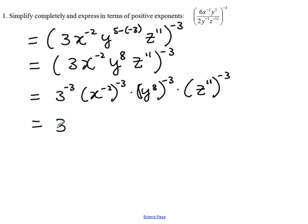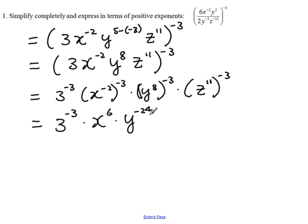Simplify more. 3 to the negative 3. x raised to the negative 2, then raised to the negative 3 — we multiply the exponents together — becomes x raised to the negative 2 times negative 3, which is 6. y raised to the 8 times negative 3 gives us negative 24. z to the 11 times negative 3 gives us negative 33.